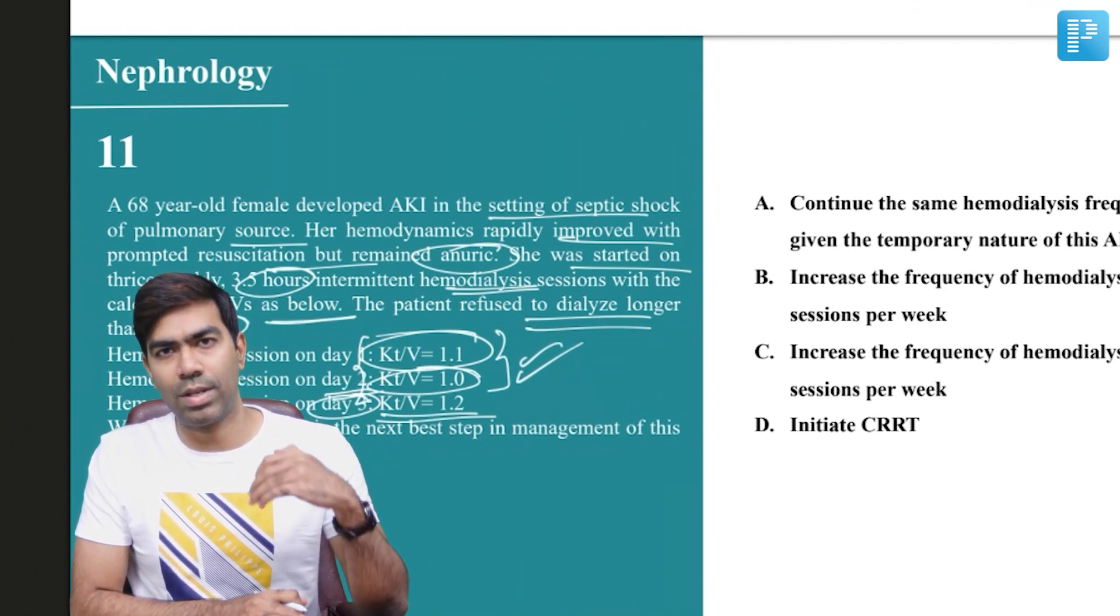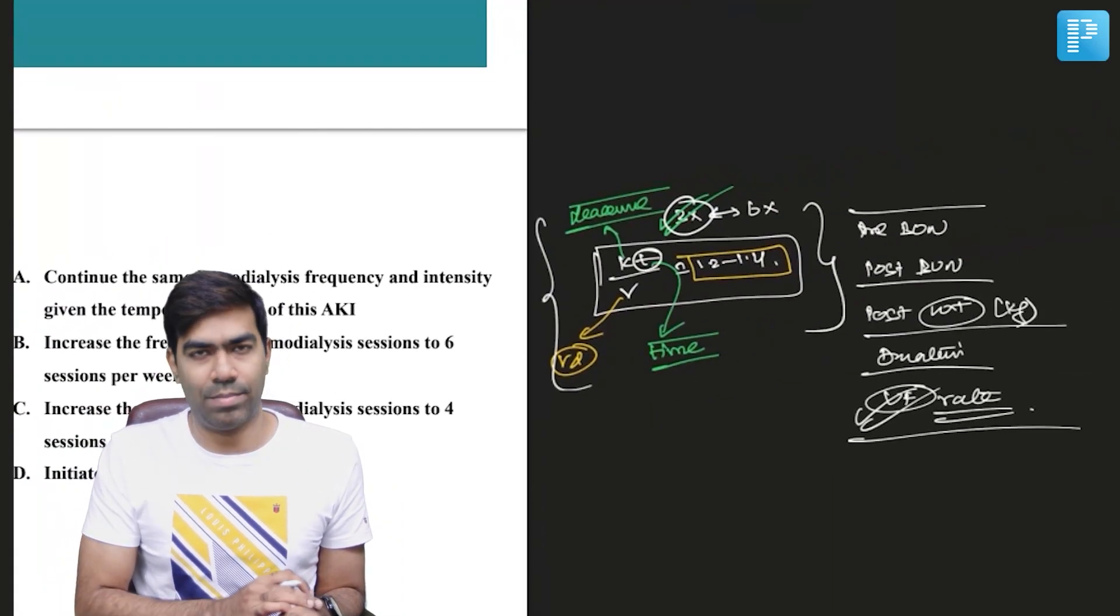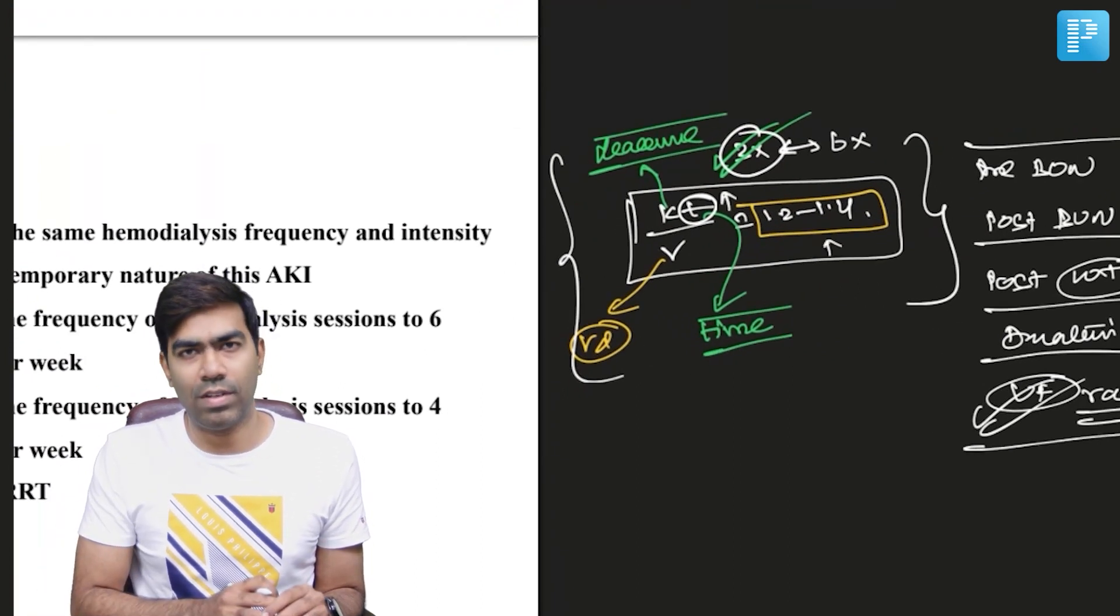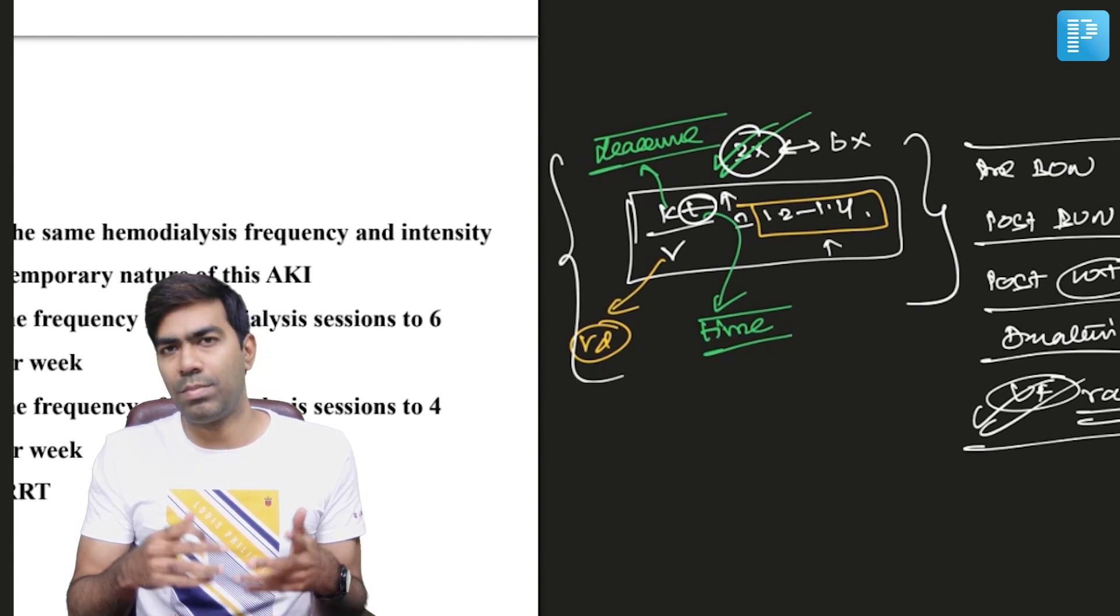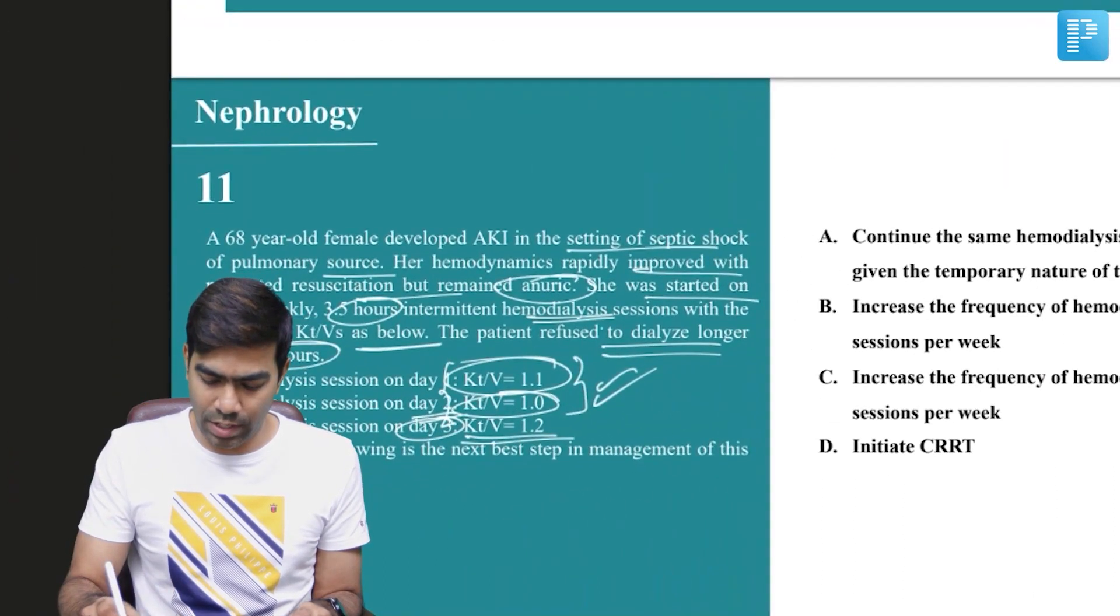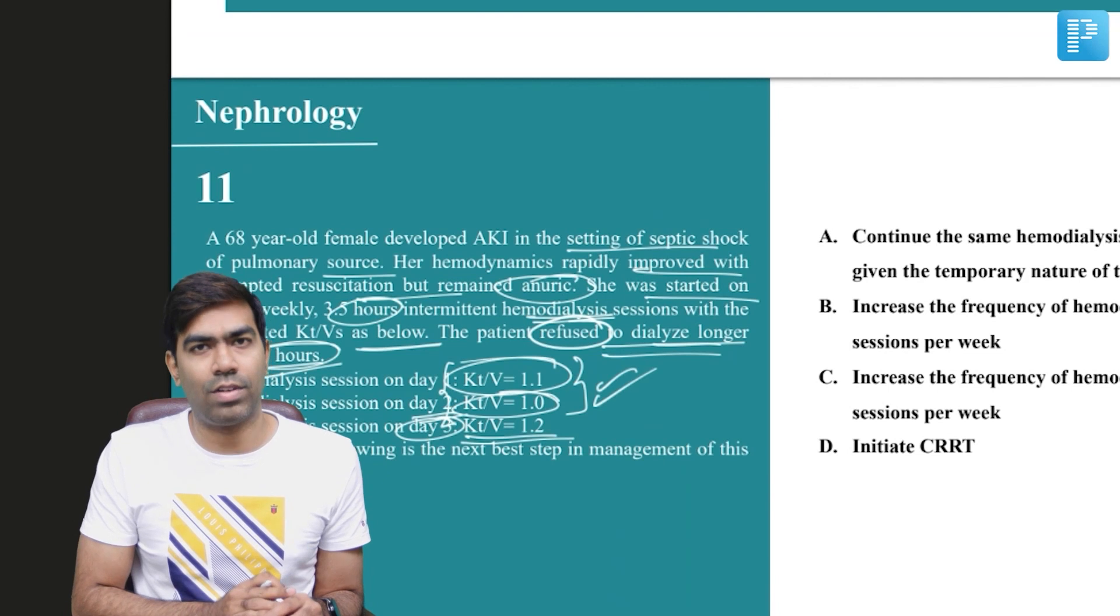It is prudent that you have to improve the dialysis efficiency. How? By increasing the time, the duration of dialysis. If you increase the duration of dialysis, definitely your KT/V will improve. We can suggest maybe four hours of dialysis per session, but unfortunately, our patient has refused to dialyze longer than three and a half hours.